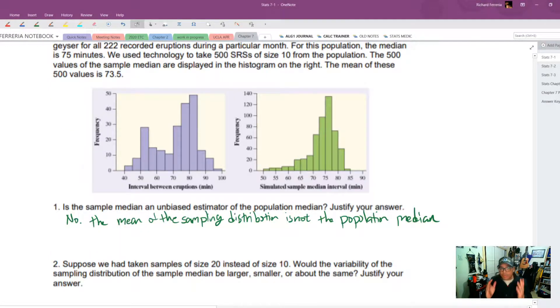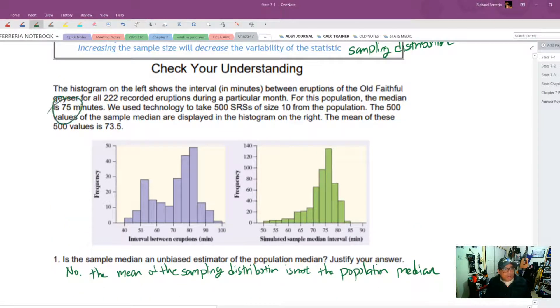Is the sample median an unbiased estimator of the population median? The answer is no. The population median is 75. However, the mean of our sample medians was 73.5. So they're not the same. Therefore, the sample median is not an unbiased estimator.